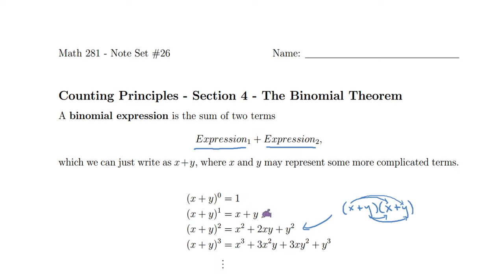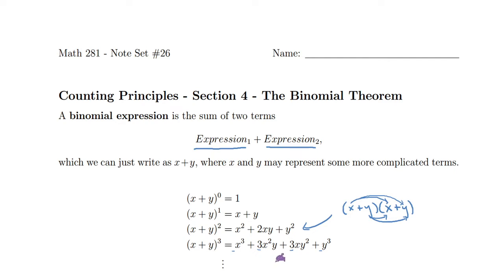If you stare at this a little bit, you'll notice some features. In general, the power of x decreases by one each time, and the power of y increases by one each time. It seems like there might be some kind of pattern for these coefficients — they kind of follow some symmetry property. I start with a one and end with a one, and there's a pattern in between. Some of you might have seen this before — that pattern can be expressed many different ways. If you have seen it before, usually you talk about Pascal's triangle, and we will talk about that in a little bit. But first, I wanted to show you what the actual theorem says.